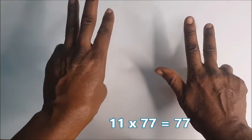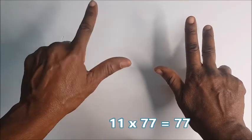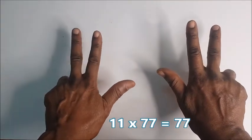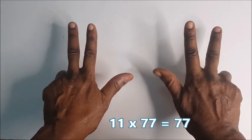Here, 1, 2, 3, 4, 5, 6, 7. 11 times 7 is 77.